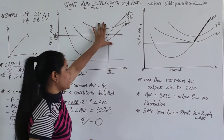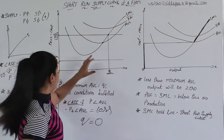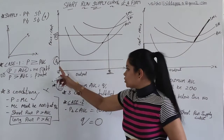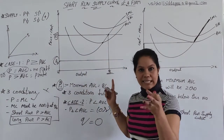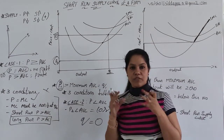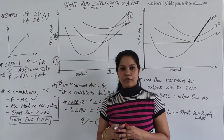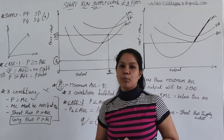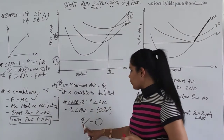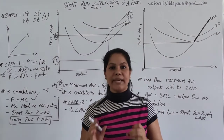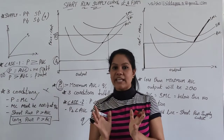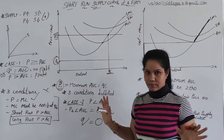At P1 the firm is ready to supply because all three conditions are fulfilled, so they supply Q1. But at P2, when price is P2, the firm does not fulfill even a single condition for profit maximization — it is a loss situation. So any company or industry in this scenario is not willing to produce anything, and the output will be zero.